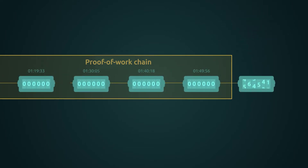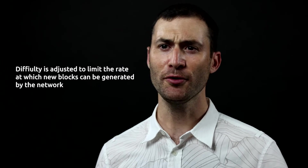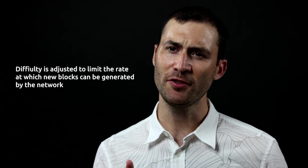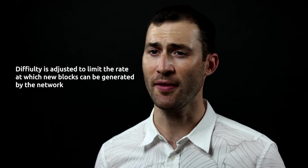The proof of work process involves running an algorithm that rapidly attempts to solve a low probability puzzle via random brute force search. A node uses a candidate block header as the input and directs ASICs to hash it to check whether the hash value is below a target. If not, the ASIC changes the nonce in the block header and re-attempts. Once the hash value is below the target, the block has been successfully mined. The difficulty of this process is adjusted to limit the rate at which new blocks can be generated by the network.